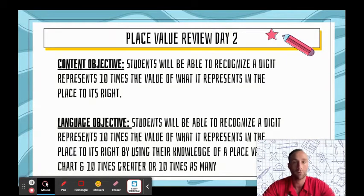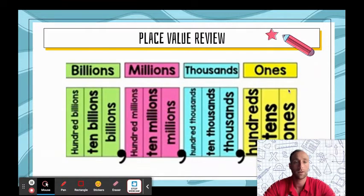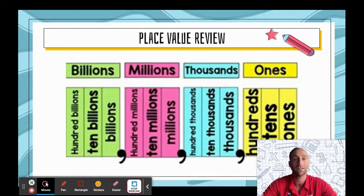Here in our place value chart we have the ones, the tens, the hundreds, the thousands, ten thousands, hundred thousands, and millions. Remember we don't have to worry too much about the billions place here as fourth graders. We know that every time we go from right to left it increases by 10 times — 10 times greater, 10 times more, or 10 times as many. So the tens place is 10 times greater than the place to its right, the thousands place is 10 times greater than one place to its right, and the millions place is 10 times greater than one place to its right.